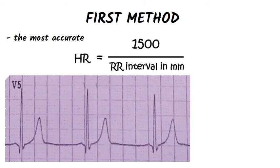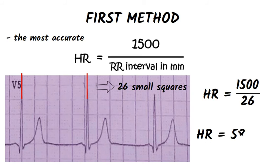We choose an R wave and we count the small squares until the next R wave. There are 26 small squares on this ECG. We divide 1500 by 26, so the heart rate is 58 beats per minute.